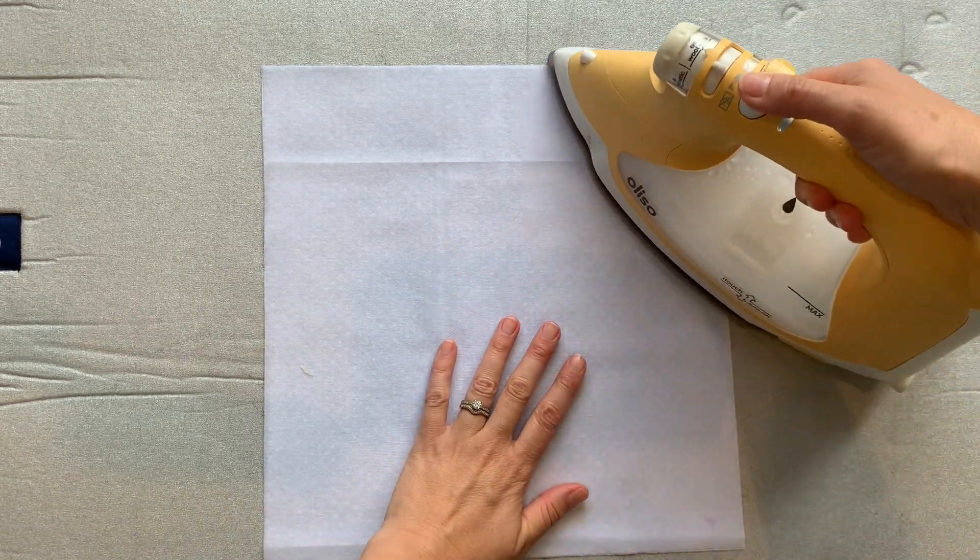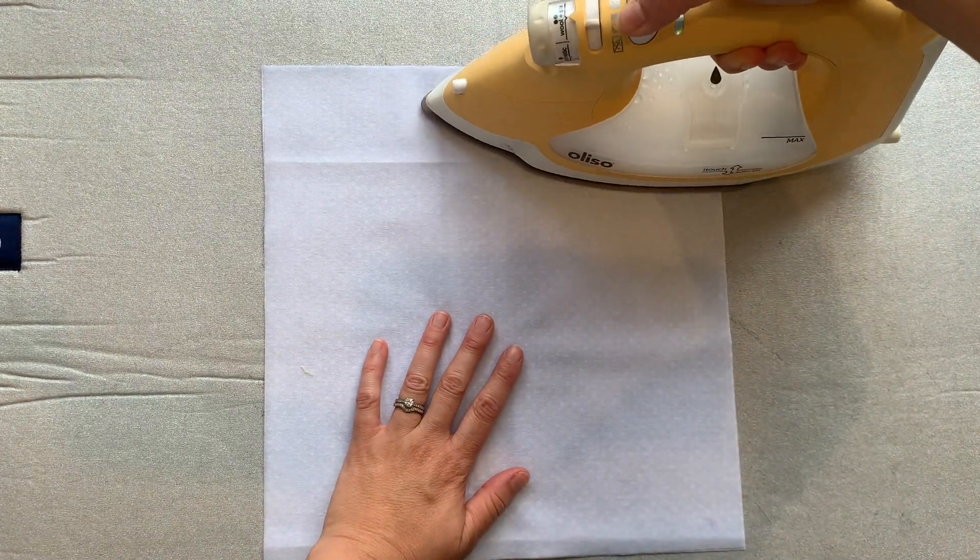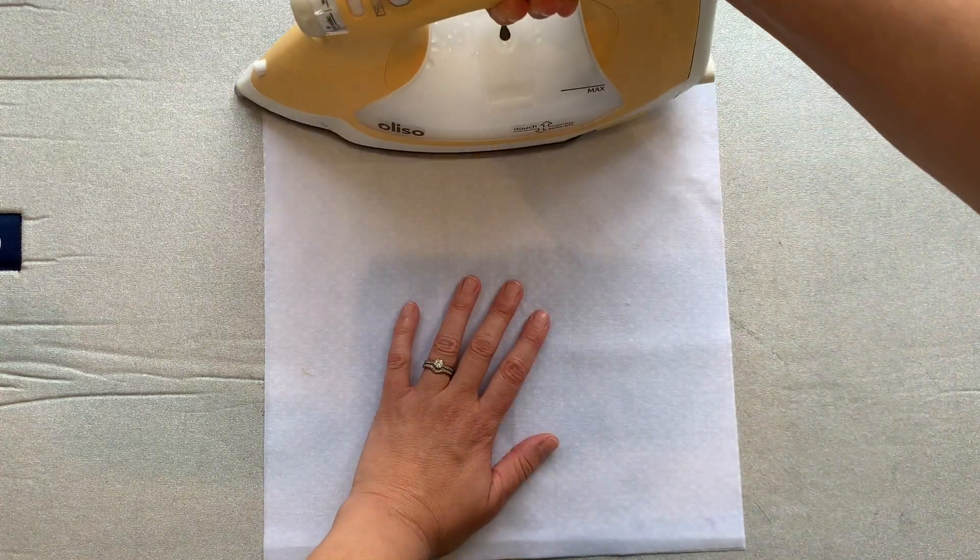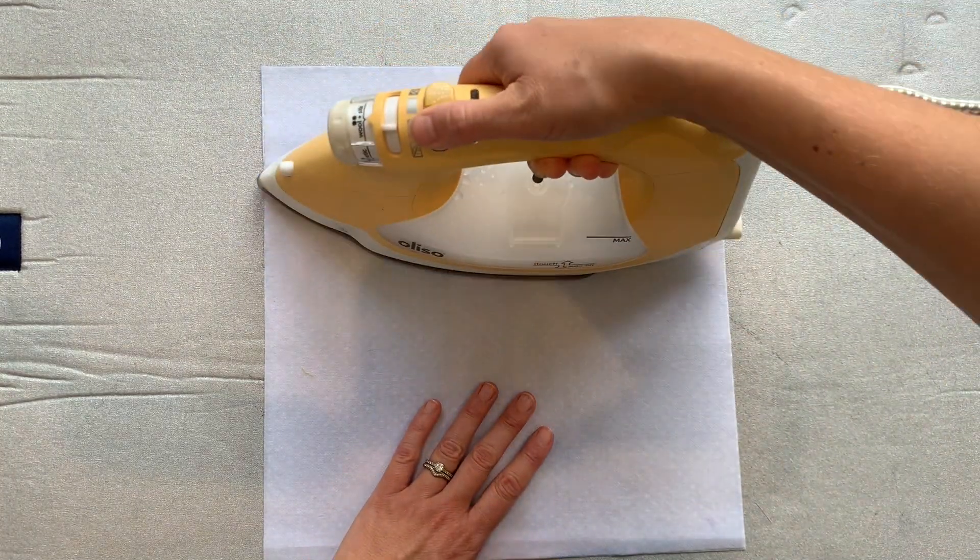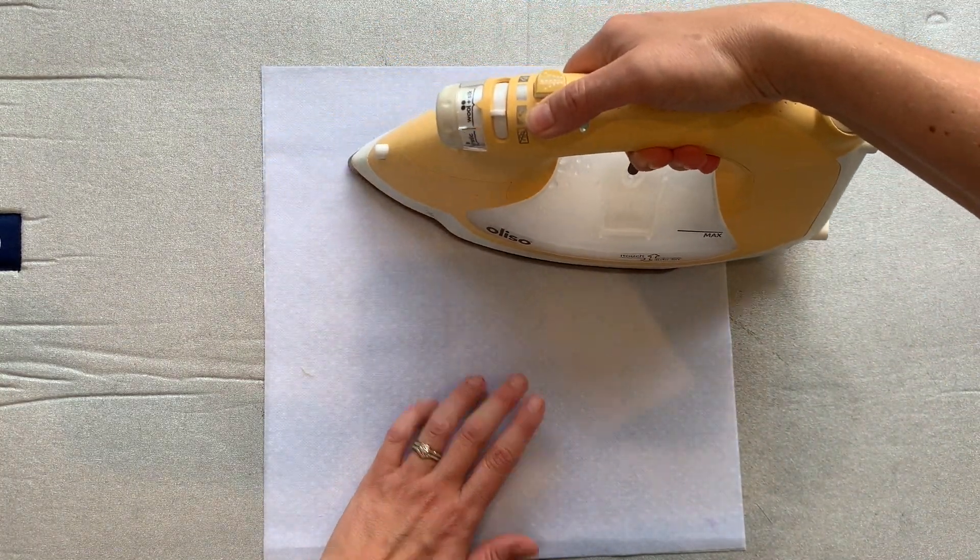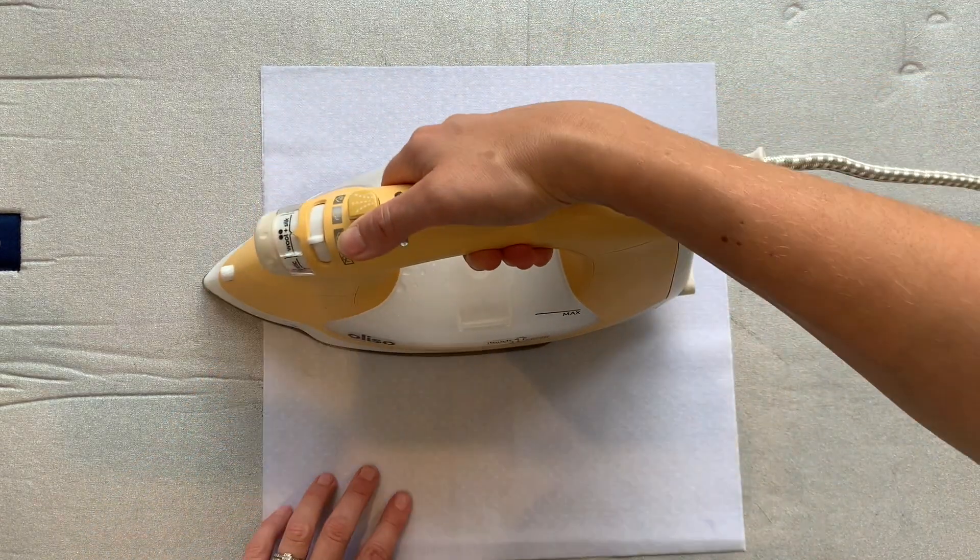Next, we want to press the... I've got my iron on two dots, by the way, not too hot. And you can use a pressing cloth if you like with the interfacing. You can also apply a little bit of steam as well, or a spritz of water.